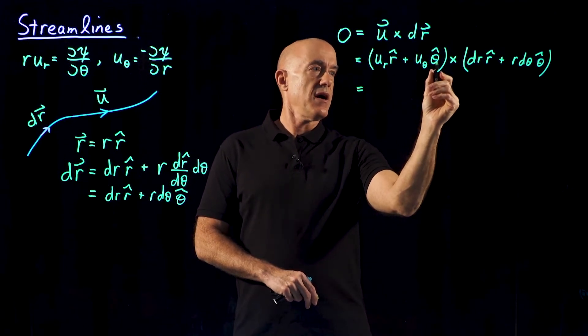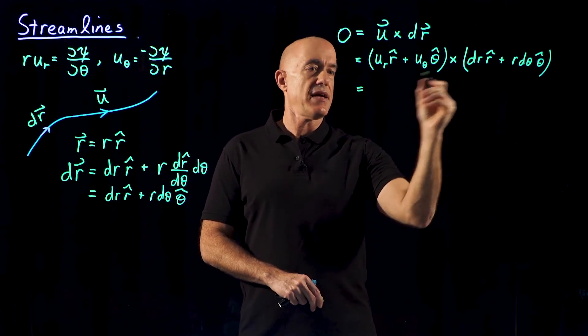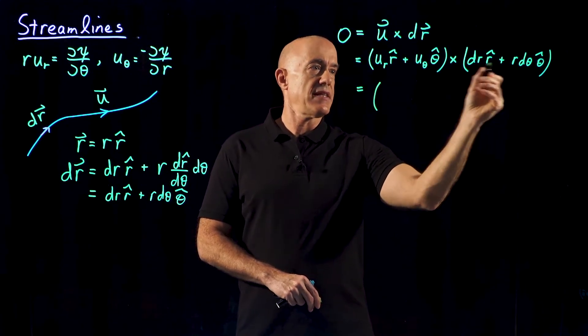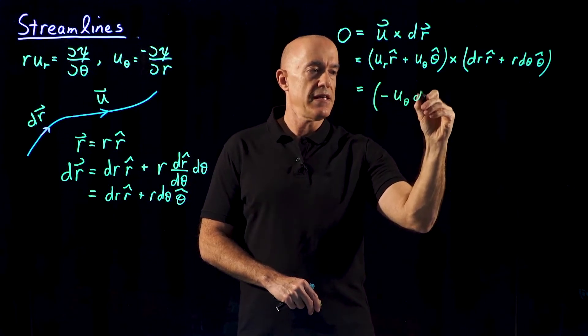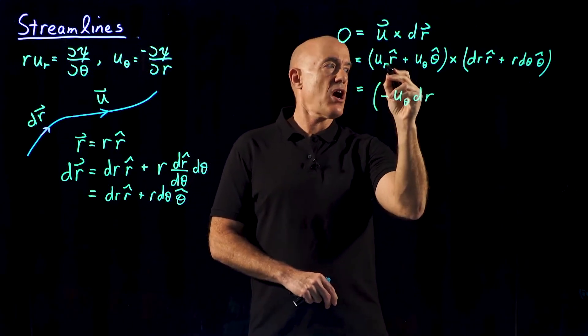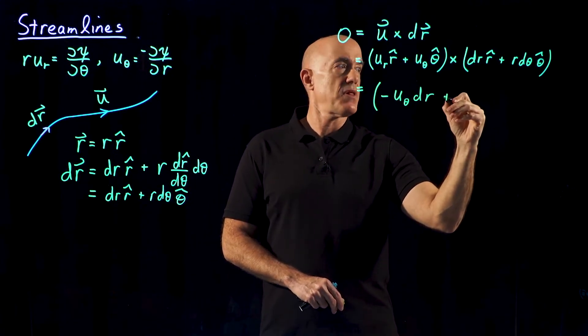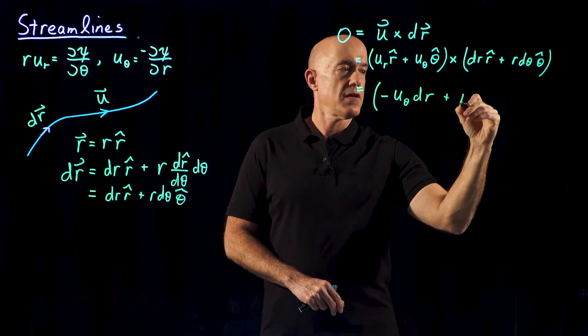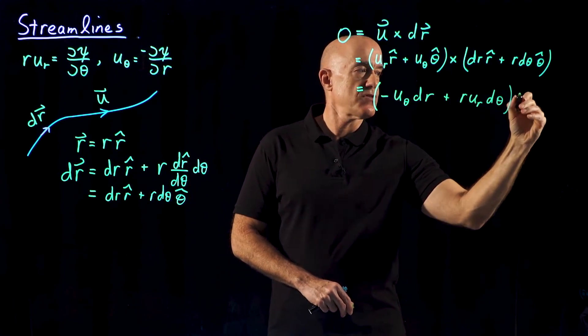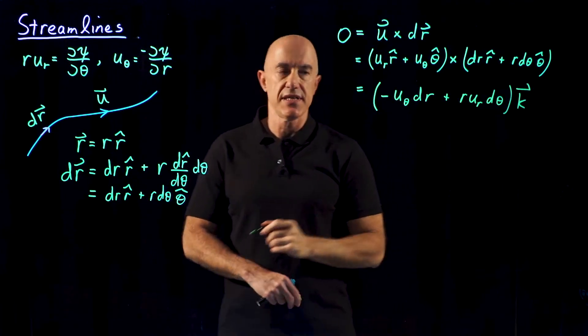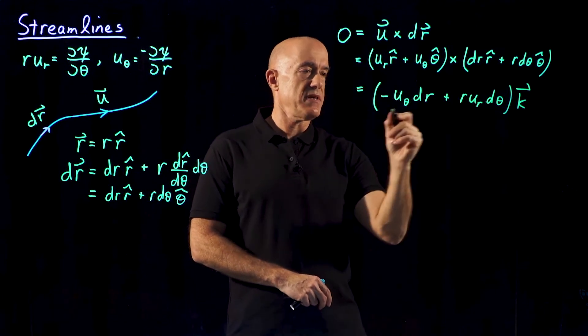So we'll start with theta hat cross r hat, which is minus k. So that will give us a negative sign, so minus u_theta dr. And then r hat cross theta hat is plus k, so that will be plus r u_r d theta. And this is all in the k direction, the z axis direction.